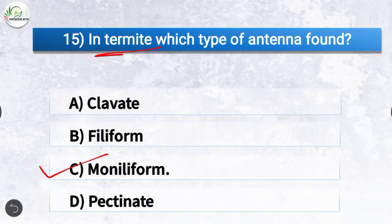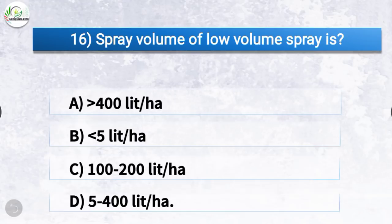Question number 16: Spray volume of low volume spray is? The correct answer is option D, 5 to 400 litres per hectare. Spray volume of low volume spray is 5 to 400 litres per hectare.